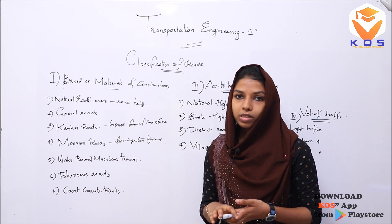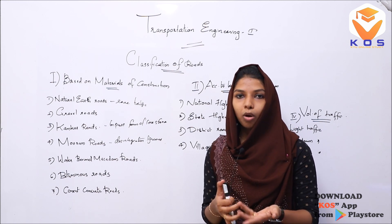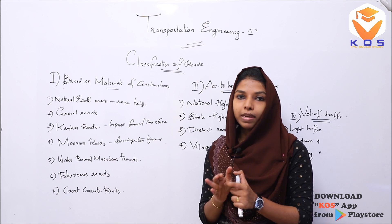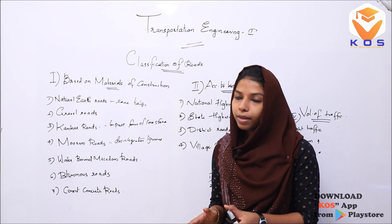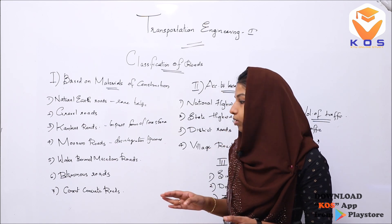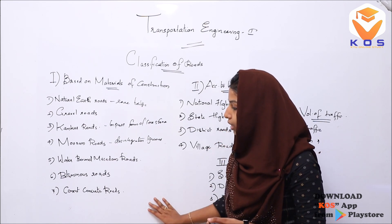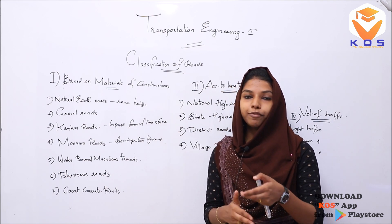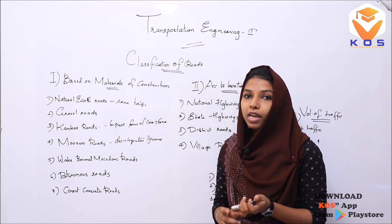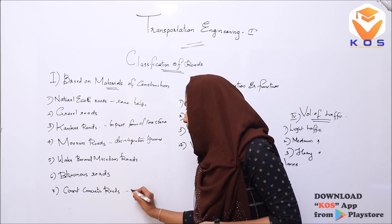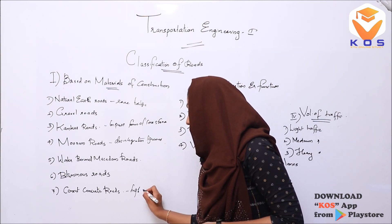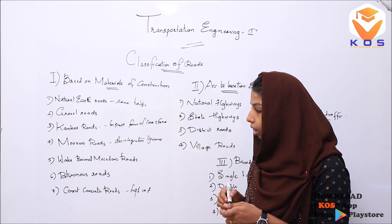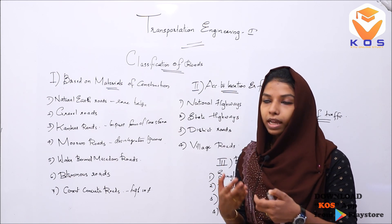The sixth type is bituminous roads, constructed using bitumen. The seventh and last type is cement concrete roads. Although cement concrete roads are high cost, they are the most efficient type of road.